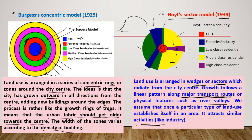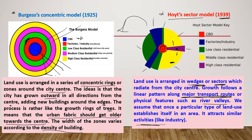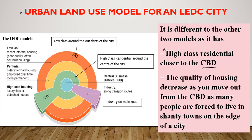Now let's look at the urban land use model of an LEDC city. It is different to the two previous models in that it has high class residential close to the CBD. High cost housing is actually close to the city center. Around the high class residential you have middle class housing, but low class residential is usually at the outskirts. In the Burgess model, high class residential is at the edge of the city, but in an LEDC city the low class residential is at the edge. High class residents stay close to the CBD because there is usually not a good road transport network. The quality of housing decreases as you move out from the CBD, as many people are forced to live in shanty towns on the edge of the city.